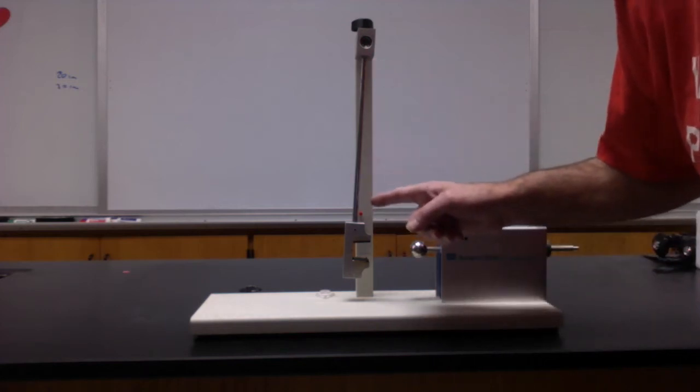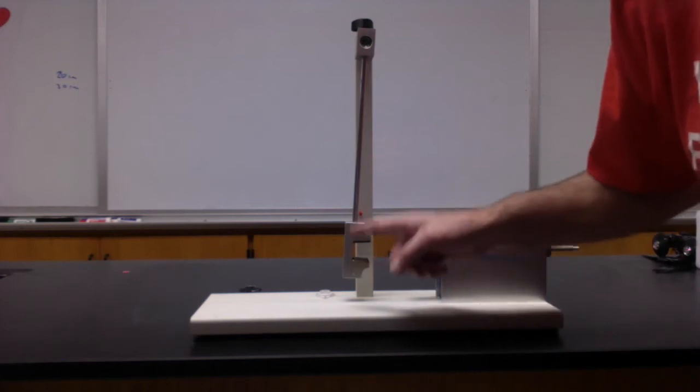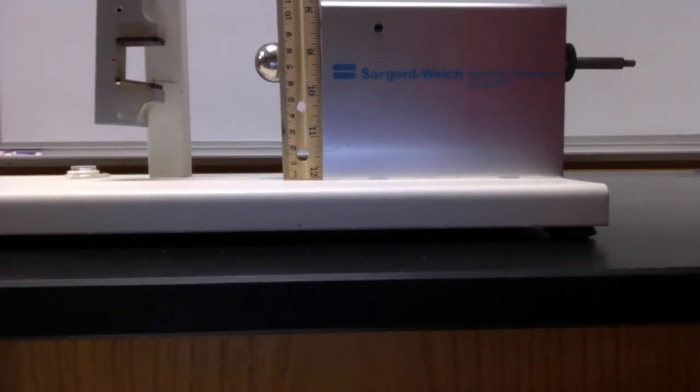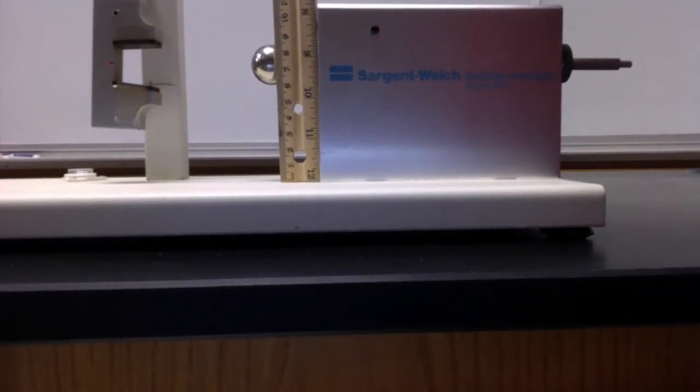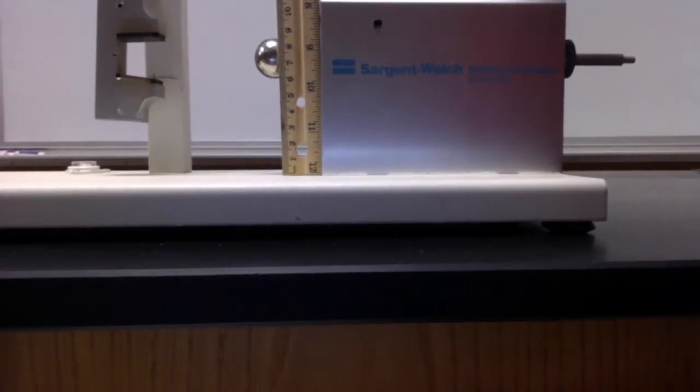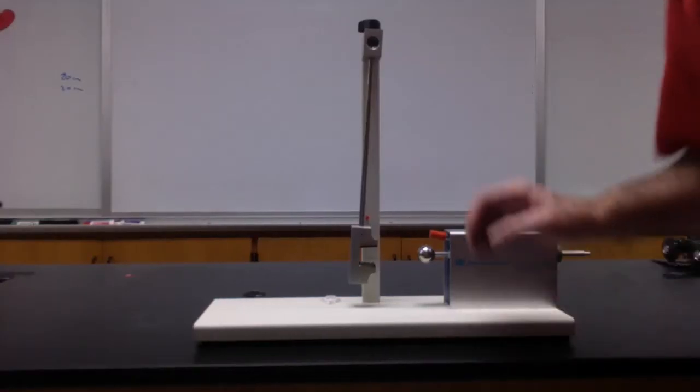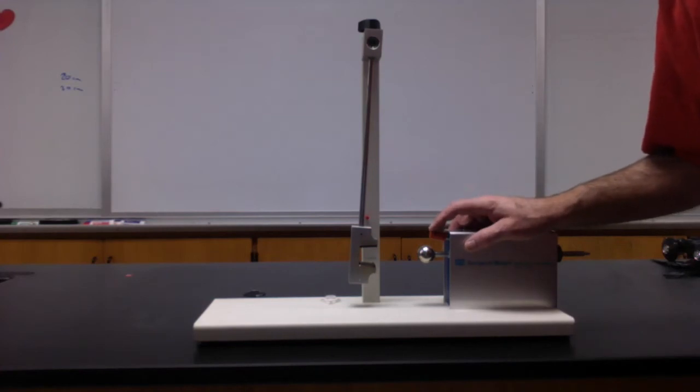I'm leveling the camera with the bottom of the ball. We get about six centimeters above the deck. Now we'll get the final height of the ball in the catcher, again trying to level the camera with the bottom of the ball.